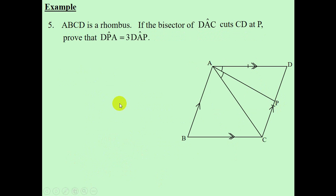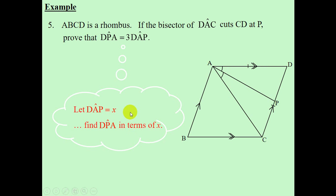We go to our last example — Example 5. ABCD is a rhombus. We need to remember all the properties of a rhombus: all sides are equal, and the diagonals of the rhombus bisect the angles of a rhombus. The bisector of angle DAC means these two angles at A will be equal — they are bisected. We want to prove that angle DPA is equal to 3 times angle DAP. We're going to use our earlier technique: let angle DAP equal to X.